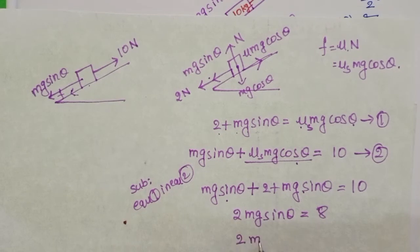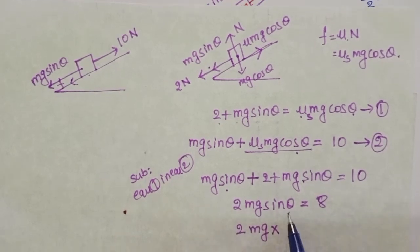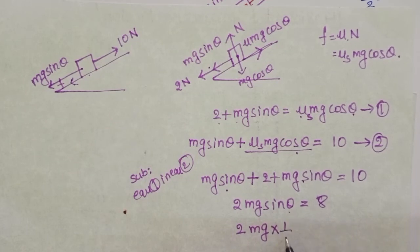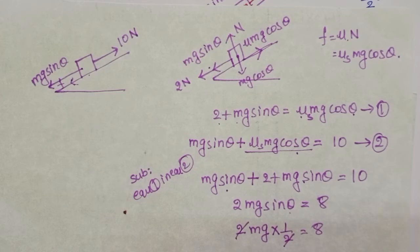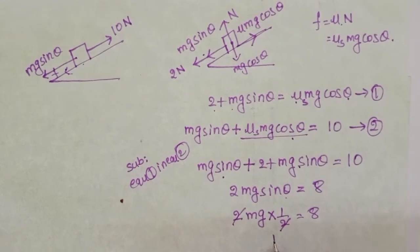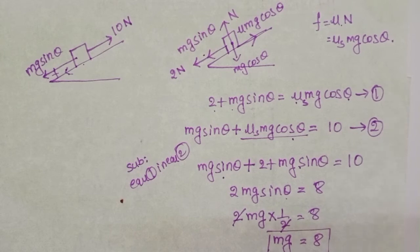With θ = 30°, sin 30° = 1/2. So 2mg × (1/2) = 8, which simplifies to mg = 8. We now have the value of mg.